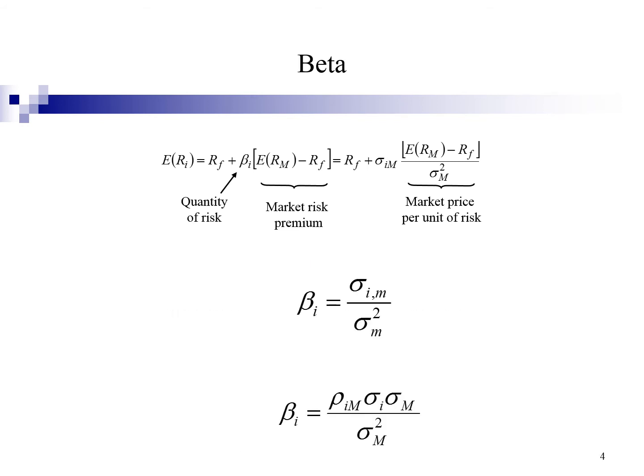What is beta? Beta is the measure of systematic risk of a security. It is the tendency of a securities return to respond to swings in the broad market. Beta measures the non-diversifiable or market risk. Beta indicates how the price of a security response to market forces. The more responsive the price of a security is to changes in the market, the higher the securities beta.